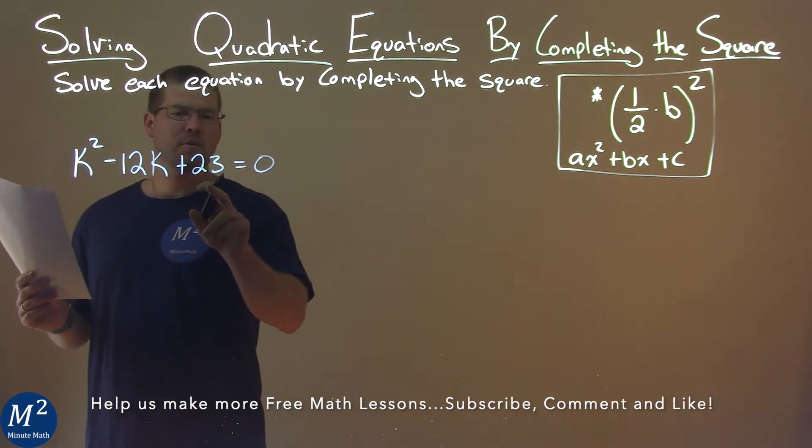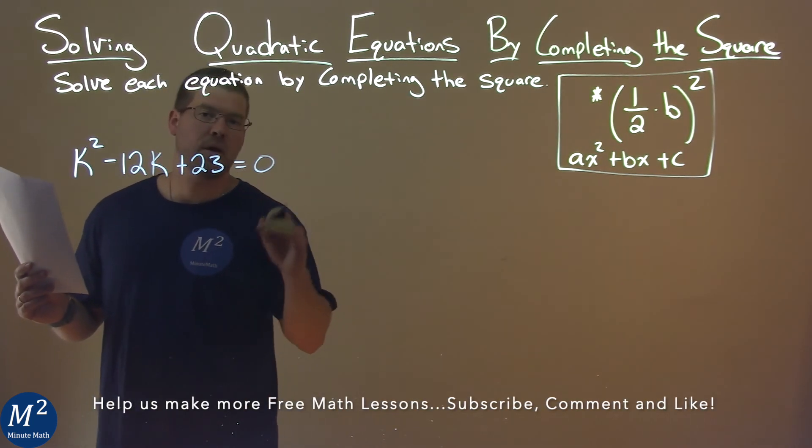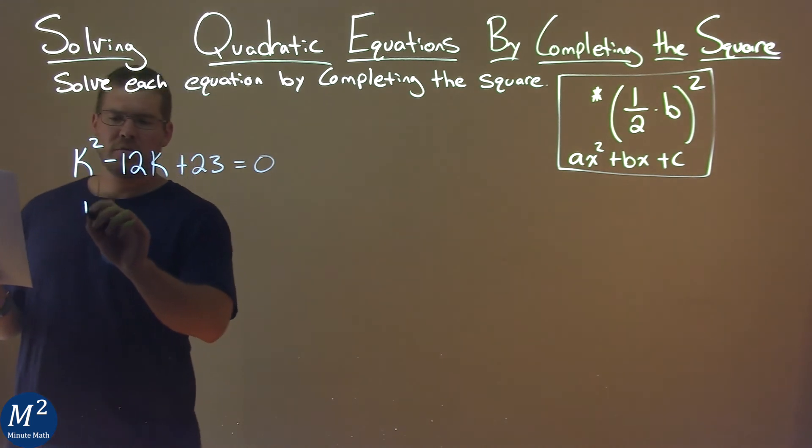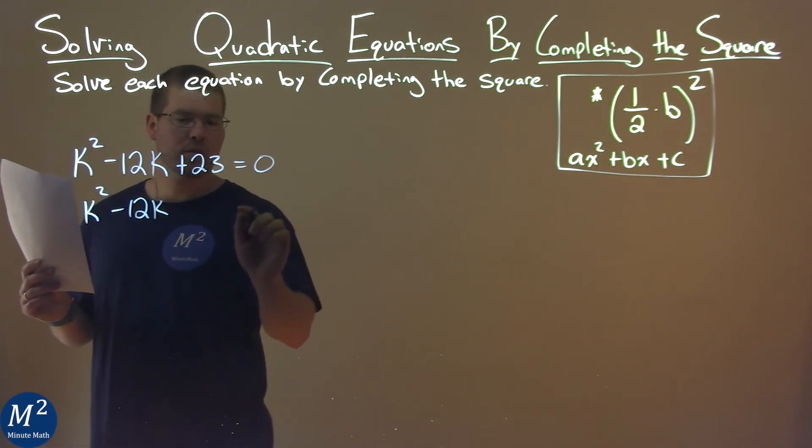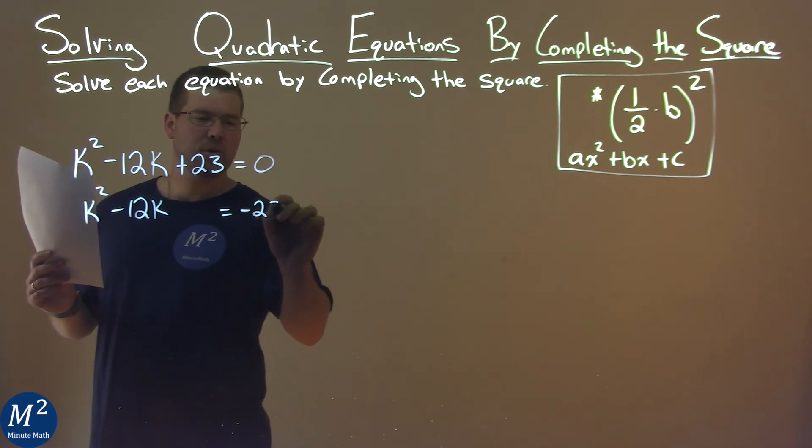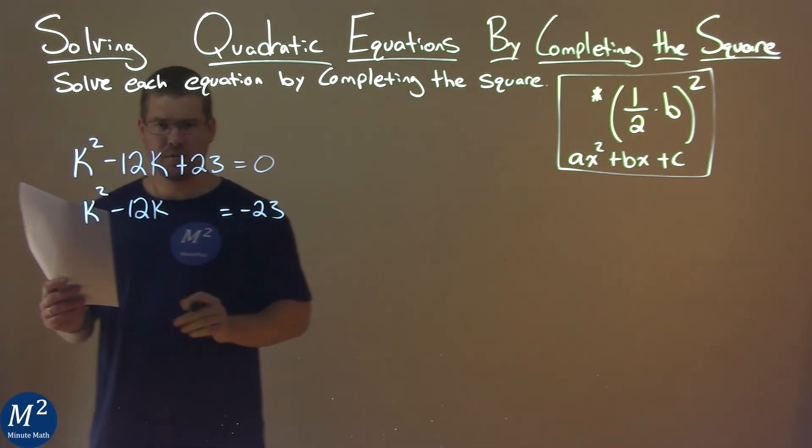First thing I want to do is subtract the 23 to both sides of the equation. So we have k squared minus 12k, and then subtracting the 23 gives me negative 23 on the right. I'll notice I left a space here, it'll be important.